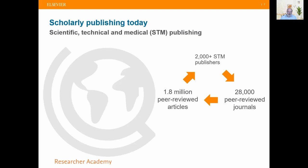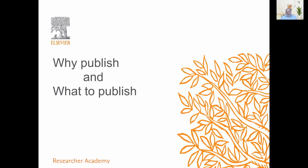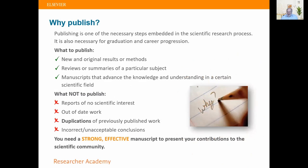There are lots of journals you can choose to submit to. If you don't publish, it's invisible. You've got to publish either in a journal or in a book or some sort of monograph. You should be publishing new original results, methods, or reviews — and ideally manuscripts that advance the field. You shouldn't be publishing reports that aren't scientific, are out of date, or are duplicates. You need a strong, effective manuscript to compete.